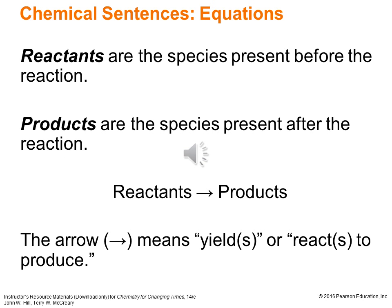We typically read chemical equations from left to right, just like in English. We'll have our reactants on the left-hand side — those are the species that are present before the reaction takes place, our starting materials. Then we'll have an arrow in between that means 'yields' or 'reacts to form' or 'produce.' And then on the right-hand side after the arrow, we'll have the products — the species that are formed during the reaction and therefore present after the reaction.